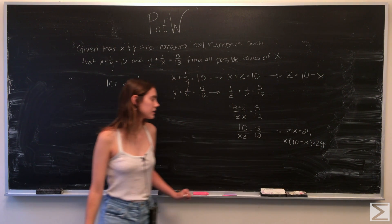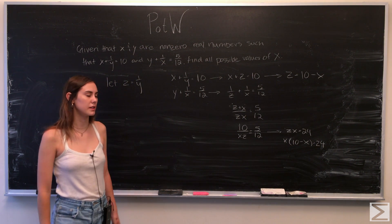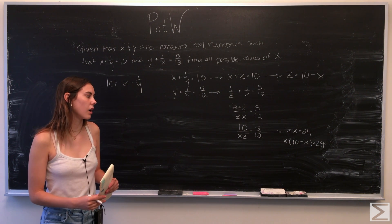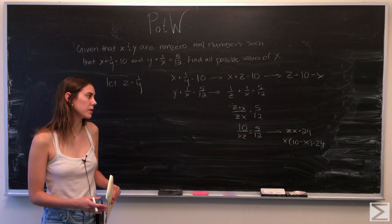So what we get is x times 10 minus x is equal to 24, and we can multiply out and begin to factor.